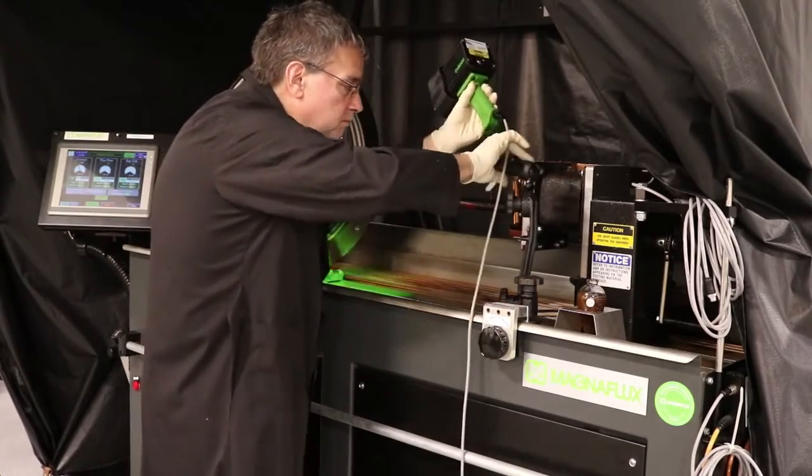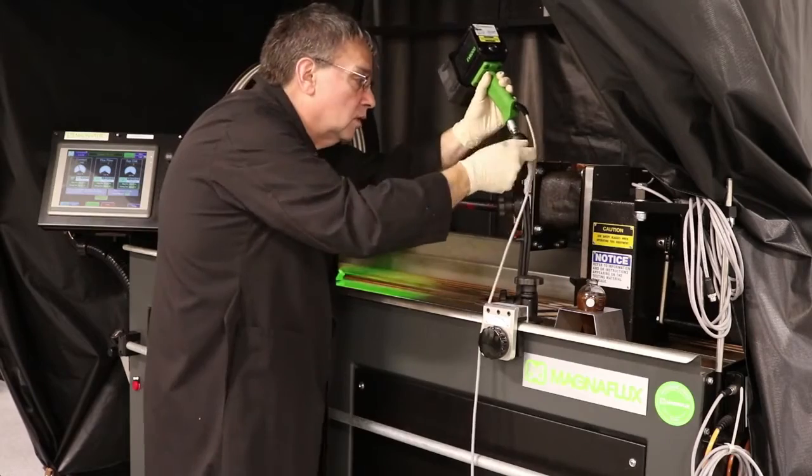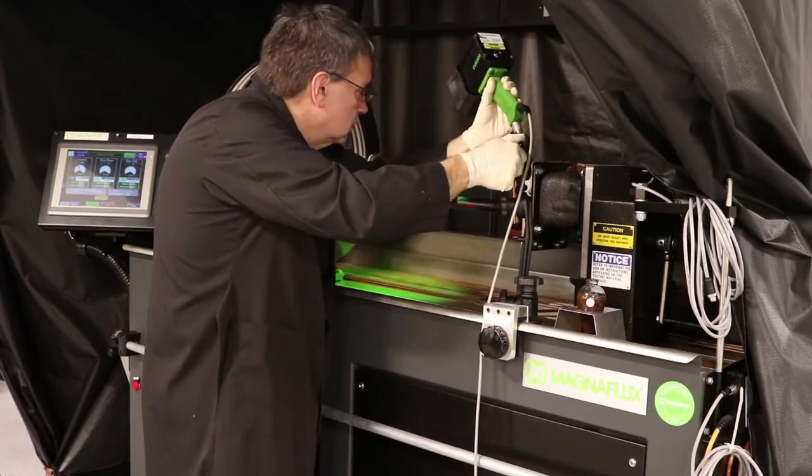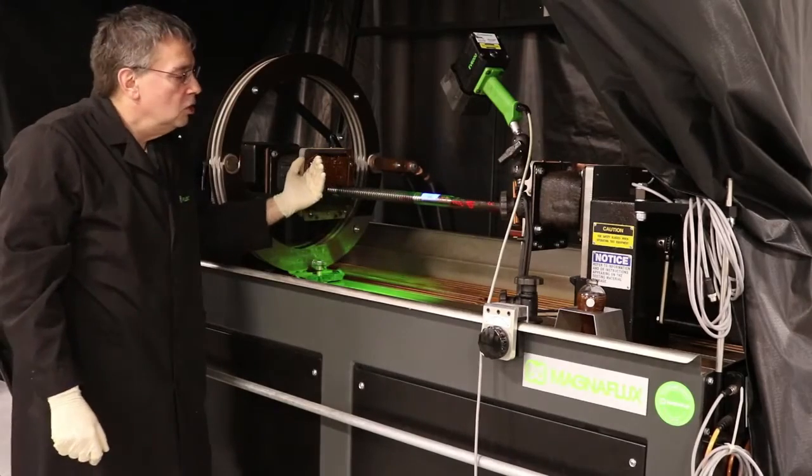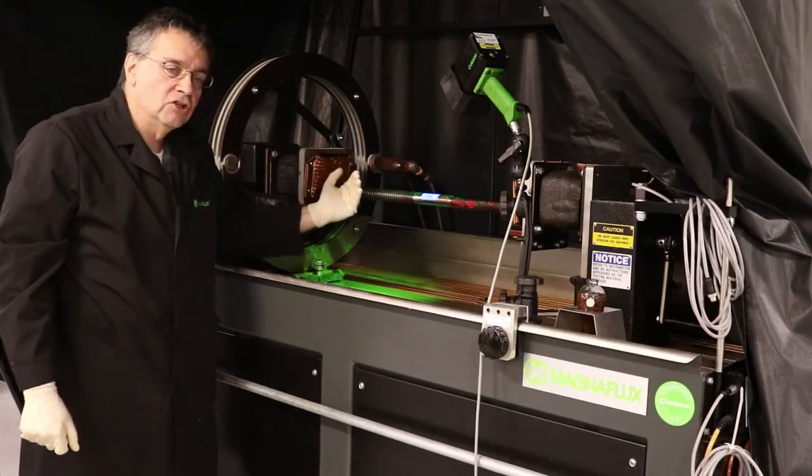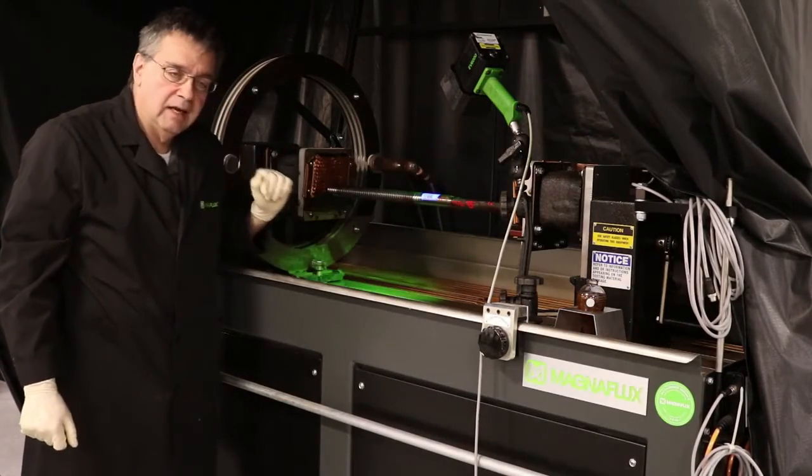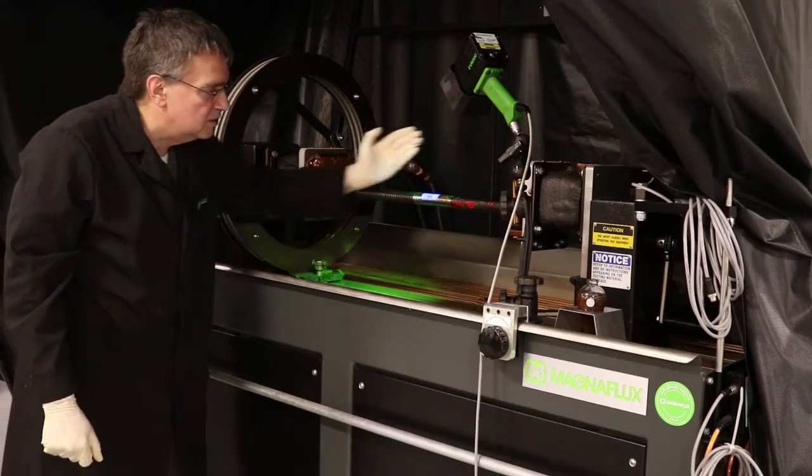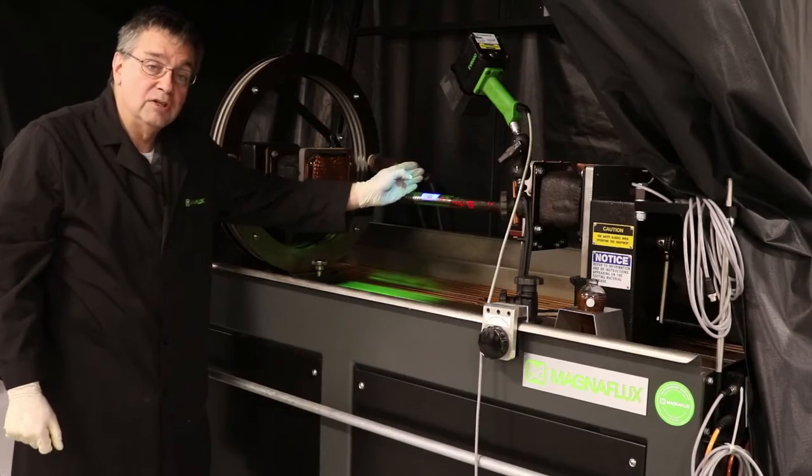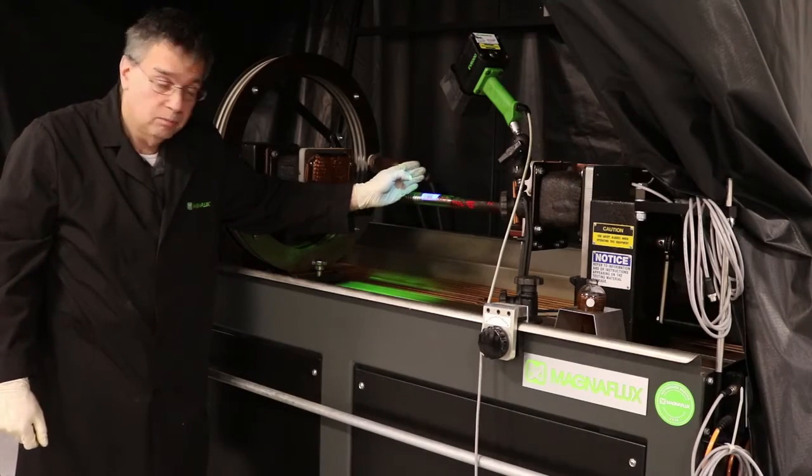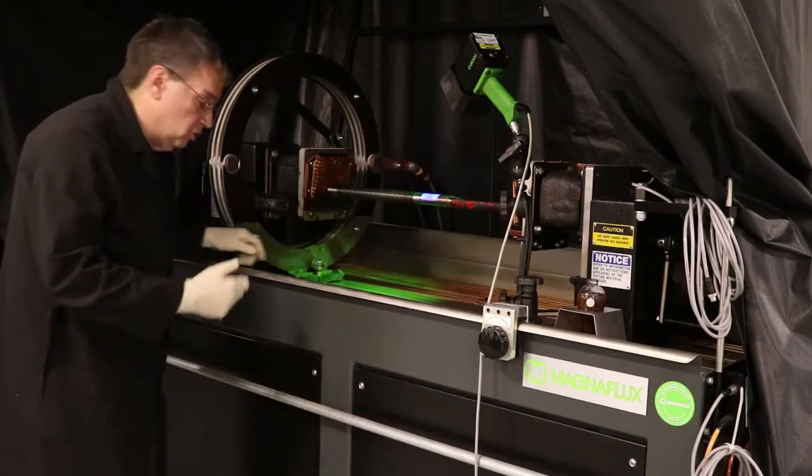Bring the coil over the position. The rule of thumb to remember is, on a contact shot, you will see indications in the direction of the magnetic current flow. In this case, it's going from the headstock to the tailstock. But you will not see indications that are exactly 90 degrees perpendicular to that current flow. This is why we have the coil shot.